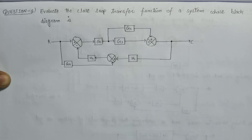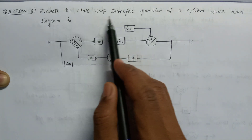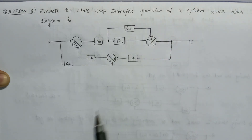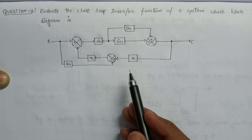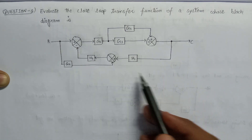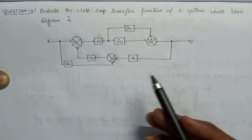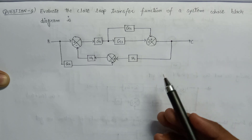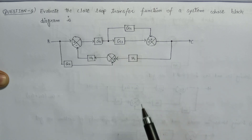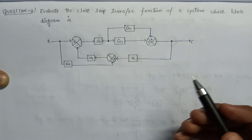Welcome. In this lecture we are going to solve a question based on block diagram reduction technique — to evaluate the closed-loop transfer function of a system whose block diagram is given. We need to find the transfer function using block diagram reduction technique, so let's analyze this complete block diagram and find the point of initiation from which we will start the reduction.